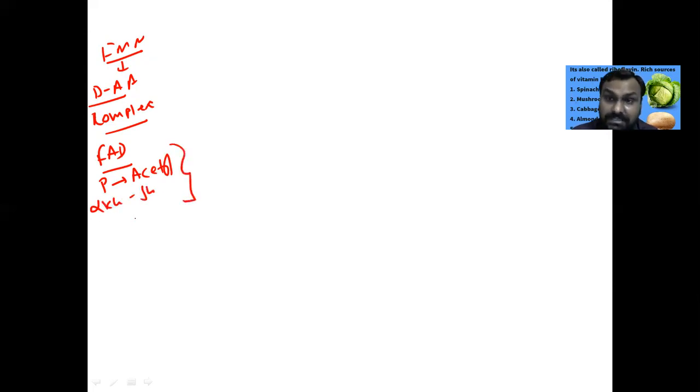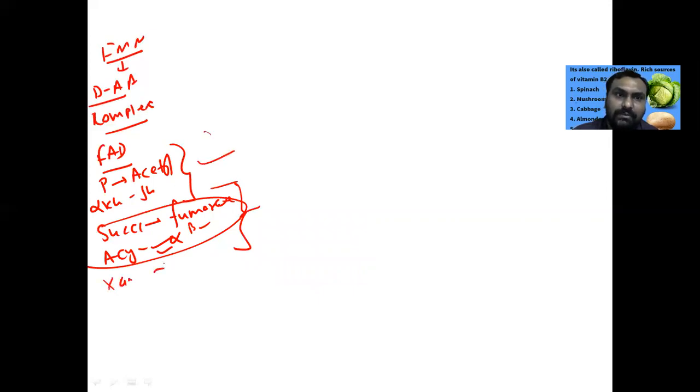Which reactions are mediated by FMN? D-amino acid oxidase enzyme requires coenzyme FMN, and complex one of electron transport chain. While FAD mediates pyruvate to acetyl-CoA, alpha-ketoglutarate to succinyl-CoA. These two are common. The specialty is that succinate is converted to fumarate in the TCA cycle, and in beta-oxidation first step, acyl-CoA is converted to alpha-beta unsaturated acyl-CoA. So FAD is converted to FADH2. This is the main role of vitamin B2. Conversion of xanthine to uric acid by xanthine oxidase also requires FADH2.